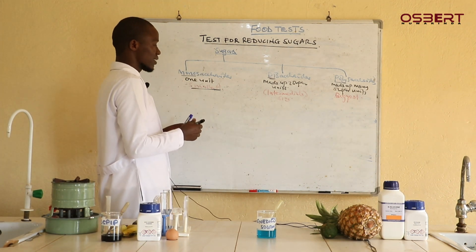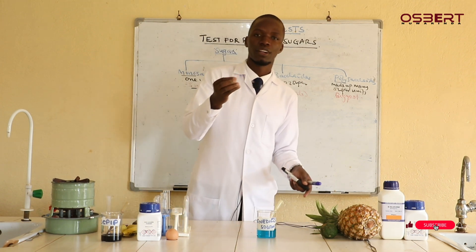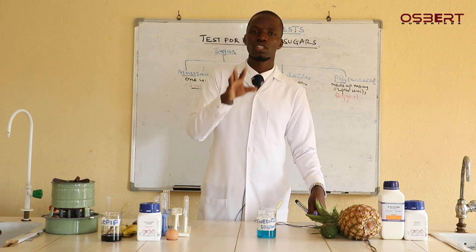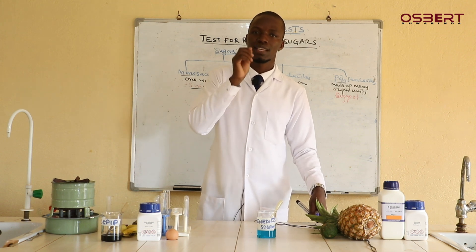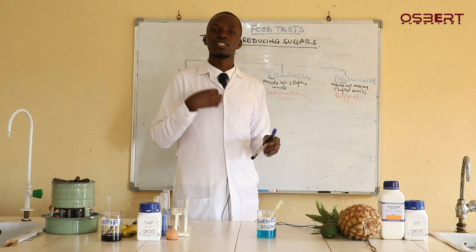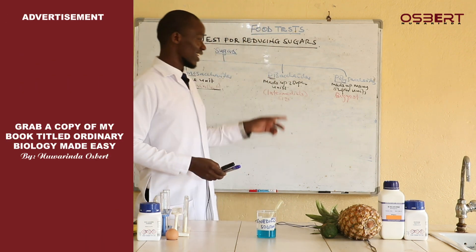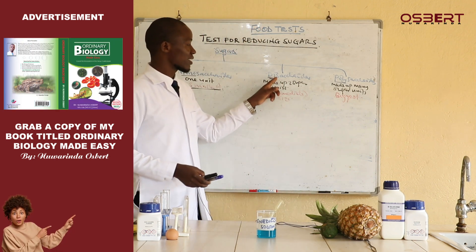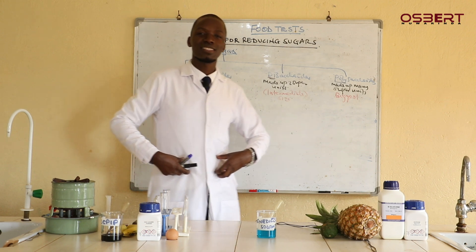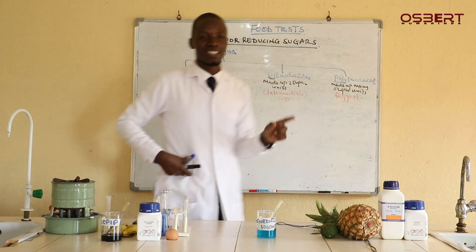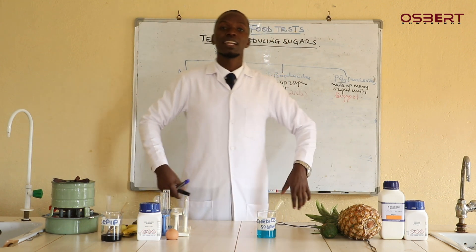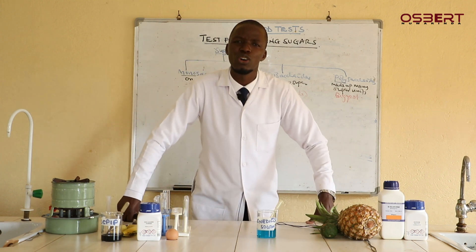Because monosaccharides are the smallest sugars, when you eat food — let me use an Irish potato example. An Irish potato has a lot of starch. When you eat that starch, it is a big sugar and therefore it is a polysaccharide. As it moves through your digestive system, it is broken down. Starch is broken down into maltose, and maltose is a disaccharide. But maltose is not the smallest — the disaccharide is intermediate in size.